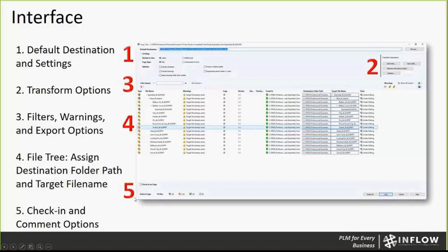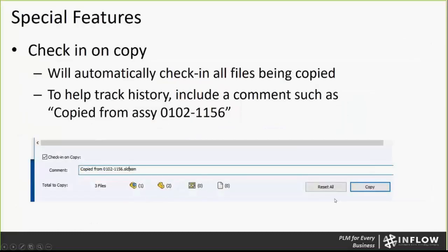Down here is an additional option really specific to CopyTree and not Pack and Go. You've got the ability to check a file in when you perform the copy. So if you're looking to create this and add it directly into the vault, you can select Check-in as Copy and just have it automatically do that for you. One of my favorite features is checking in on copy — it gives you the ability to automatically check in all the files being copied right away. What I really like is you can use it to help track your history, including a comment such as 'this was copied from Assembly 012-1156,' so if you look at the history of this file, you can tell what base model it came from.